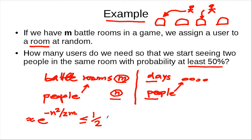So this is e to the minus 0.693 something like that. So you need n squared over 2m to be roughly this, so this gives you something like n squared over 2m has to be at least 0.693.